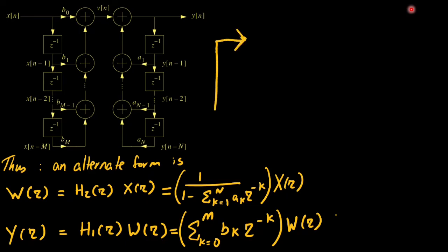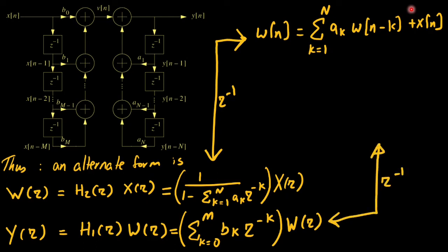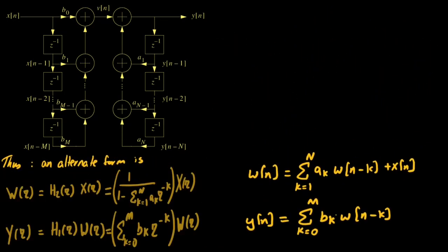By taking the inverse z-transform of w of z so we get w of n which is simply a summation from 1 to n ak w of n minus k plus the input x of n. And similarly the output y of z has the inverse z-transform in terms of y of n and this has a summation from 0 to m bk w of n minus k.